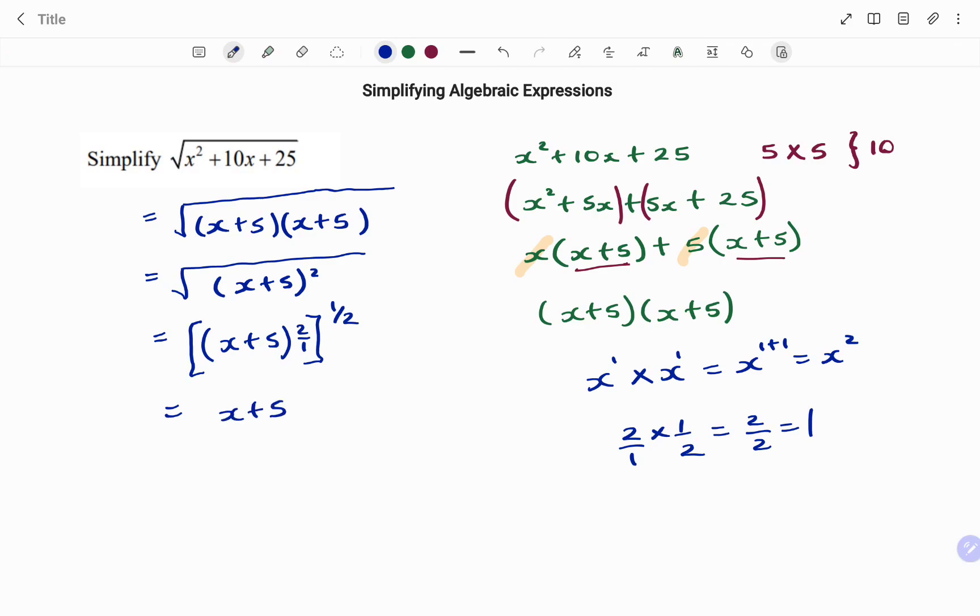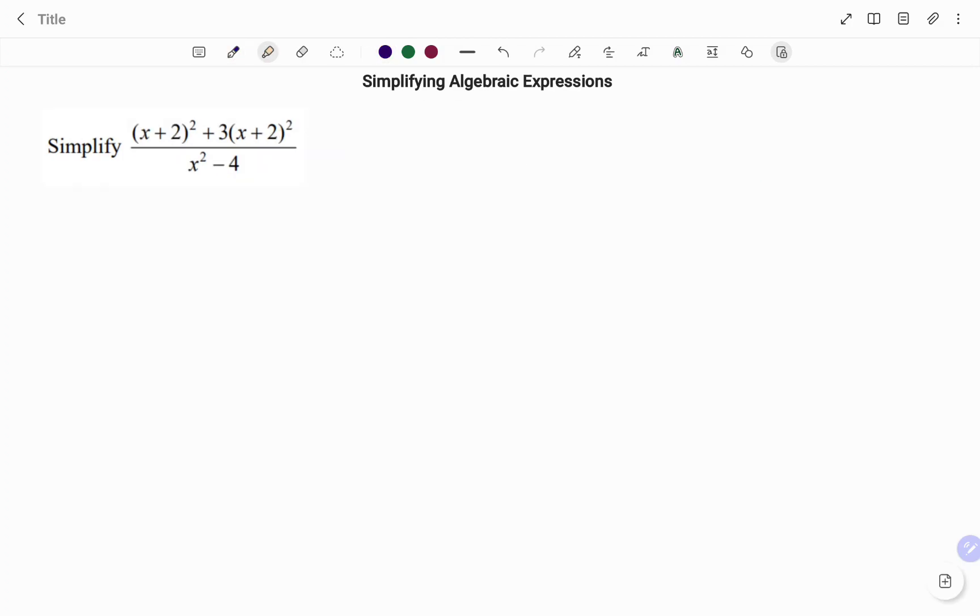Let's look at the second example. I'm going to simplify (x plus 2) squared plus 3(x plus 2) squared divided by x squared minus 4.